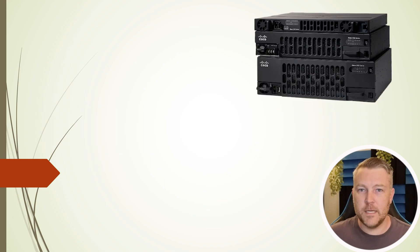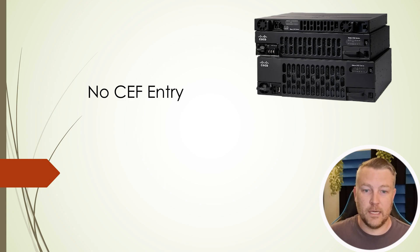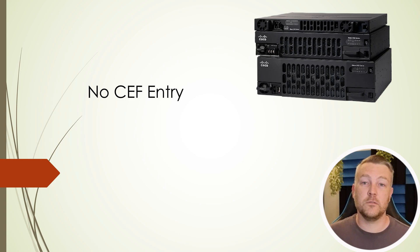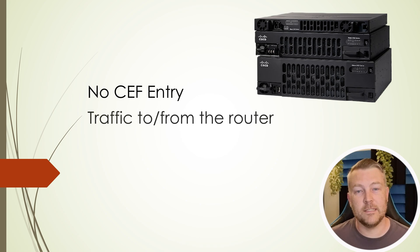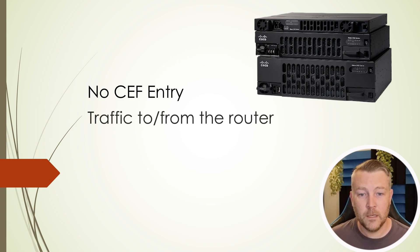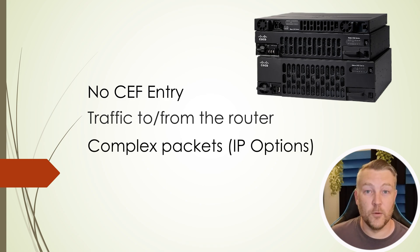So what type of packet is typically punted to the CPU? If a packet comes in and there's no entry in the CEF table, so it doesn't know how to handle it — that could also include if something needs extra special handling, such as responding to an ARP request. It might also happen if a packet is destined to or from the router itself, and it could also happen if the packet is complex — so that means if it has IP options enabled.